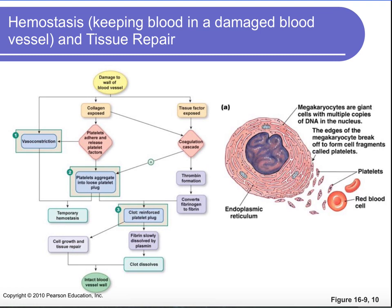Hemostasis, or blood clotting, is important because when we have damage to our blood vessels, we need to make sure we don't bleed out. Megakaryocytes break off pieces that become platelets, which circulate in the blood. When a blood vessel is damaged, collagen inside the vessel wall gets exposed. That exposed collagen attracts platelets, causing the coagulation cascade to turn on. The body then needs to restrict blood flow to the area, quickly stop bleeding, create a more permanent solution, and repair the tissue.